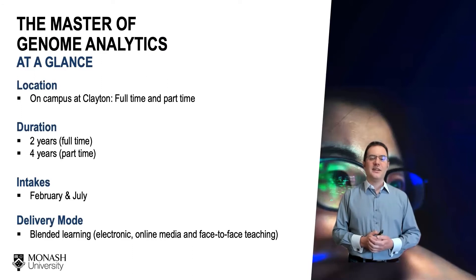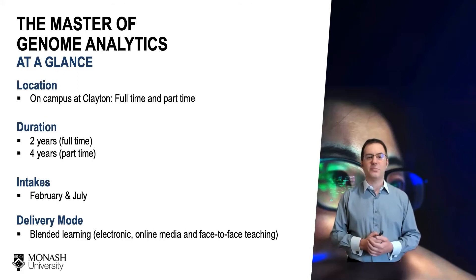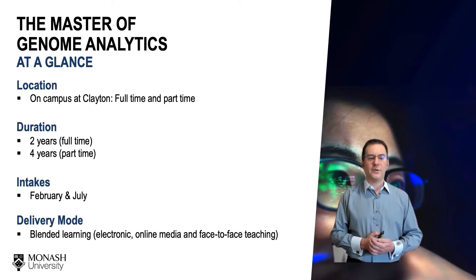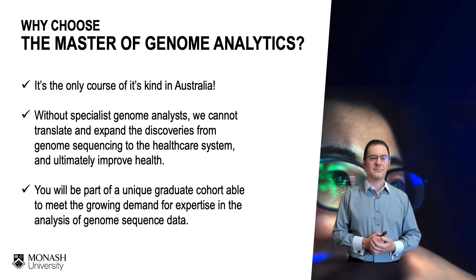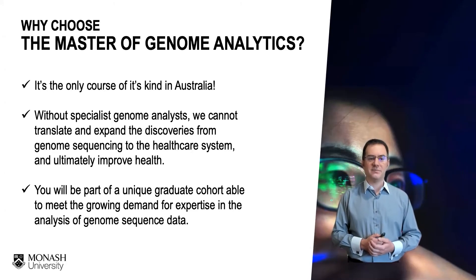The Master of Genome Analytics is taught at the Clayton campus. It is delivered in a blended mode, so there'll be some face-to-face components on campus, some online material to work through in your own time, and practical classes and workshops — again blended, sometimes online, sometimes face to face. It's a two-year masters, or you can take it part-time over four years. Depending on your undergraduate or prior experience you may be eligible to do a one and a half year version instead of two years, and that will dictate whether you enter in February or July. It is the only course of its kind in Australia, really focused on training you to become a genome analyst and meet that growing demand for experts able to analyze genomic sequence data.